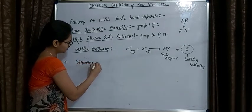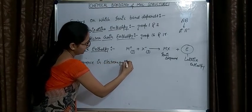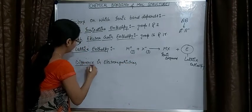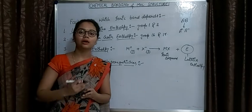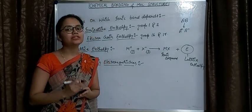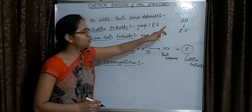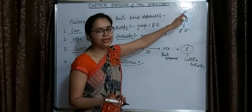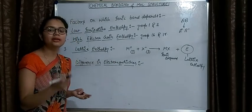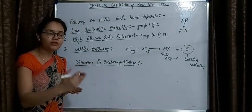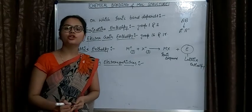The fourth factor is difference in electronegativities. As we know, ionic compounds form by the transfer of electrons. Transfer of electrons is possible only when the difference in electronegativities of the two atoms — the cation and anion — is large. Only then can an electron be transferred from one atom to another. So a large difference in electronegativity will favor the formation of an ionic bond.